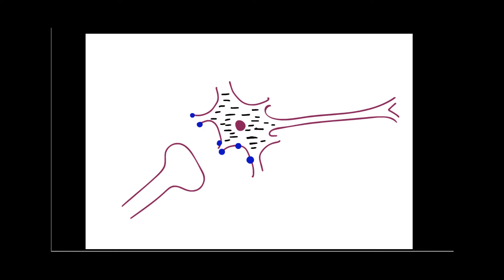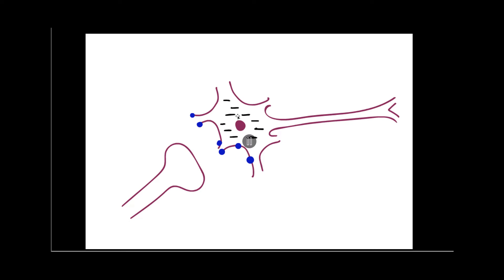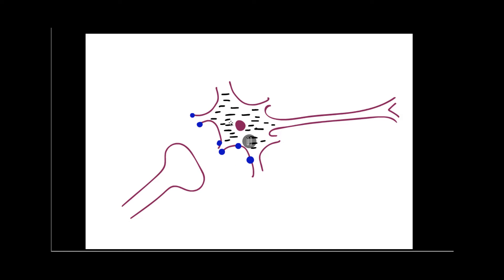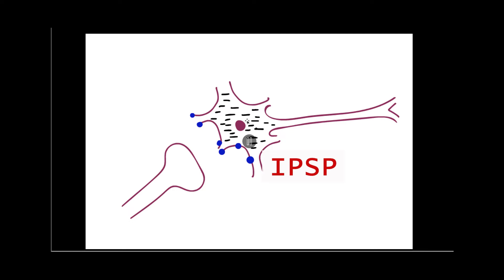Here we see a neurotransmitter that causes the post-synaptic neuron to become more negative. So if the pre-synaptic neuron causes the post-synaptic neuron to become more negative from the inside, we call it an inhibitory post-synaptic potential, or IPSP.